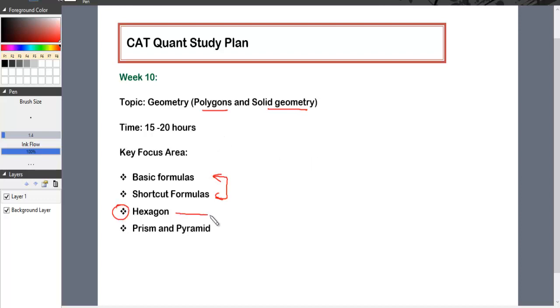Hexagon is nothing but six equilateral triangles combined together, and it's also one of the symmetrical geometrical figures, so lots of questions have appeared from hexagon.